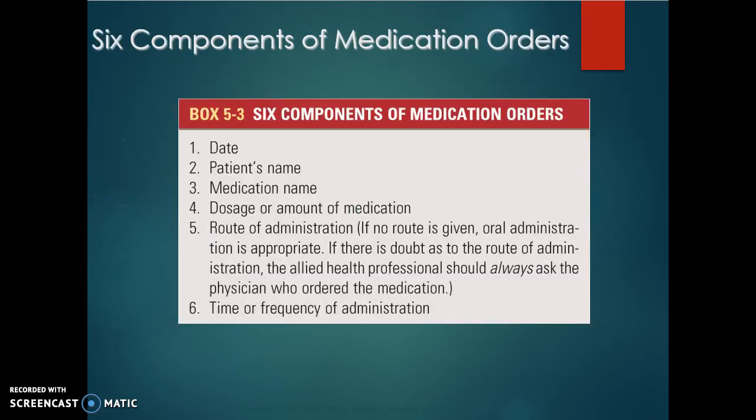There are six components of a medication order, as seen in Box 5-3. The first is date, second is patient's name, third is medication name, fourth is dosage or amount of medication, and fifth is route of administration. If the route is not given, oral administration is appropriate.